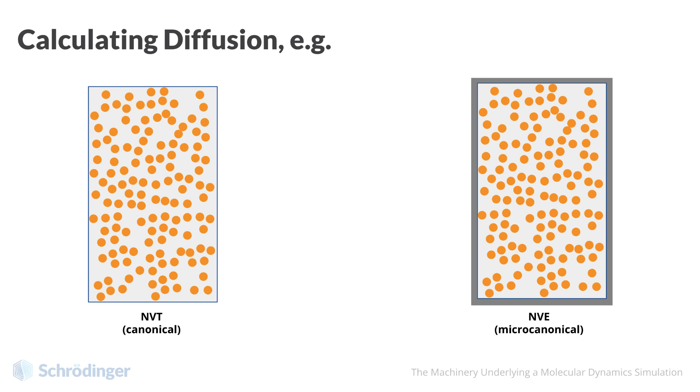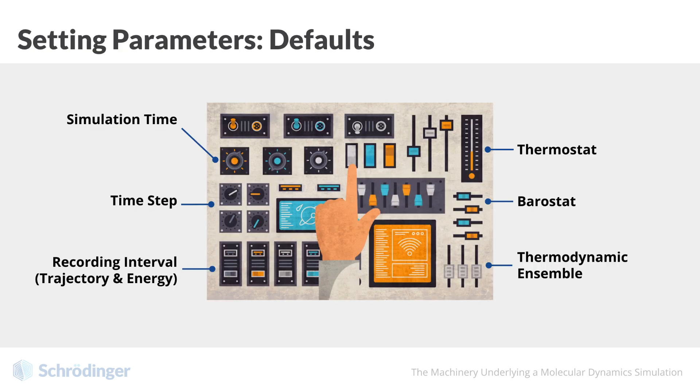When setting up simulations, the most commonly adjusted parameters will be presented to us in panels with default values provided. These default values are often good starting points but not necessarily perfect. They can be adjusted based on our objectives. One major benefit of working in Schrödinger's material science suite is that defaults for various workflows are chosen based on scientific validation, minimizing potential for error in our simulation design.